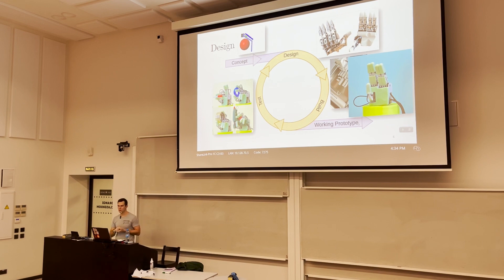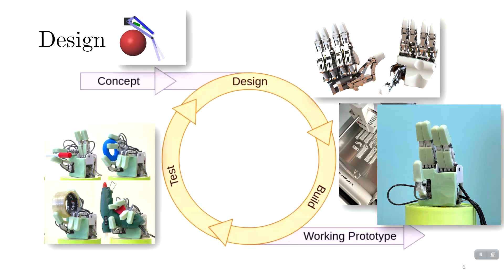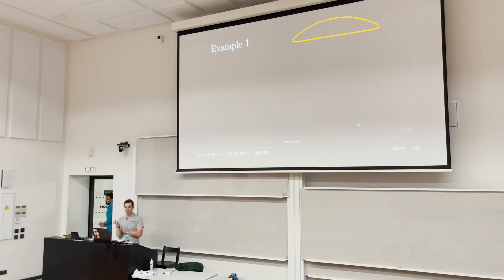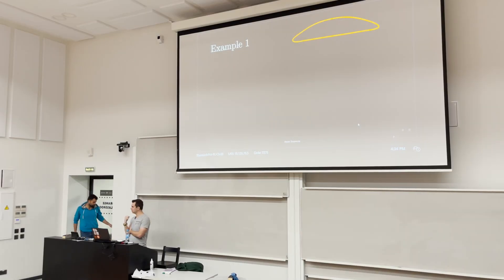What we actually want to do — for example, right here you can see a trajectory. Let's assume that we want to create a mechanism that just follows this trajectory.